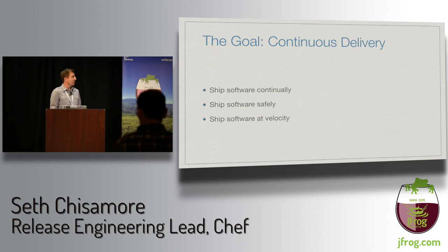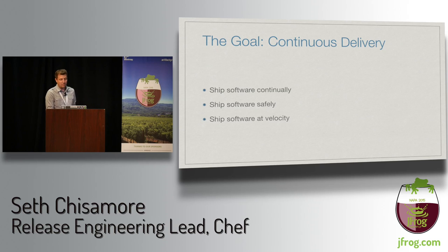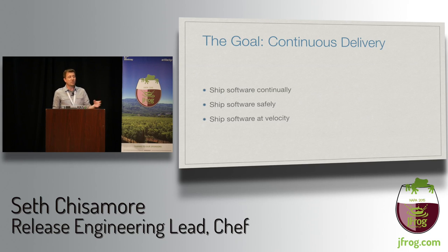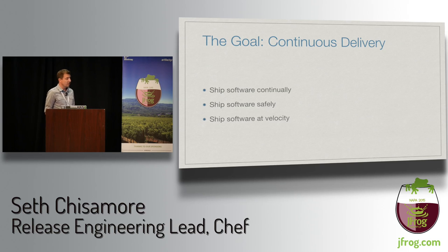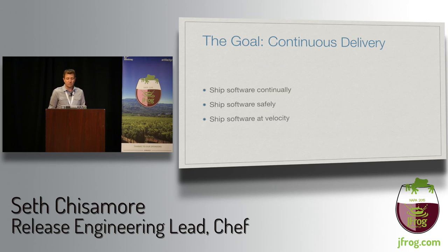So what's the goal? For us the goal is continuous delivery. We want to ship software continually, safely, and at velocity. We want to get new features and fixes into our end users' hands as soon as they are merged. We want to foster an engineering culture that encourages experimentation so engineers can try ideas and get them shipped. And we want a build produced any time one of our product's dependencies changes.